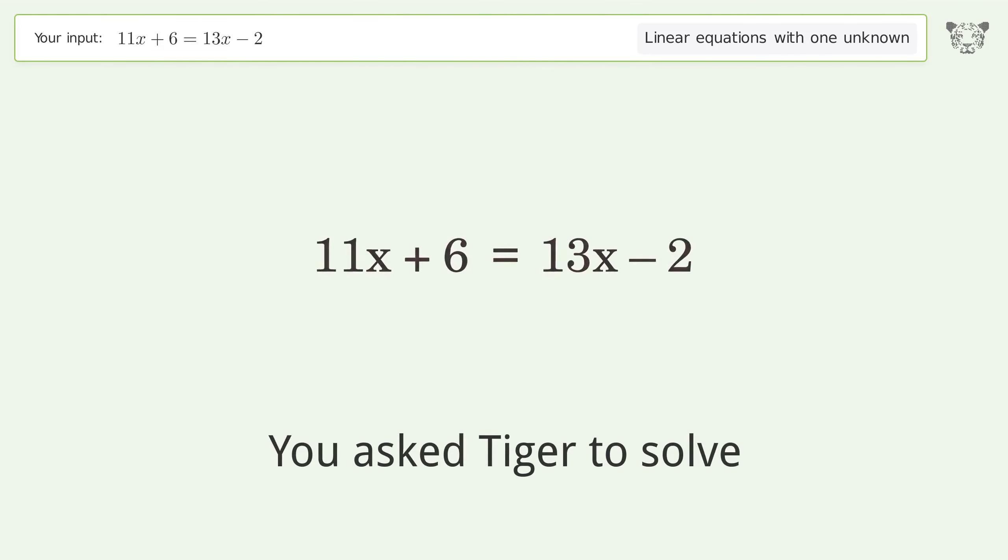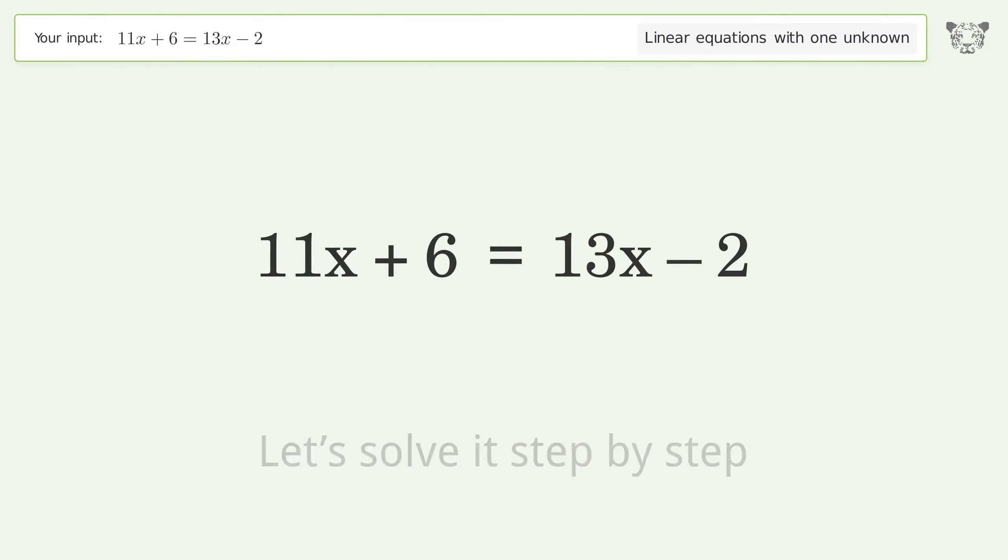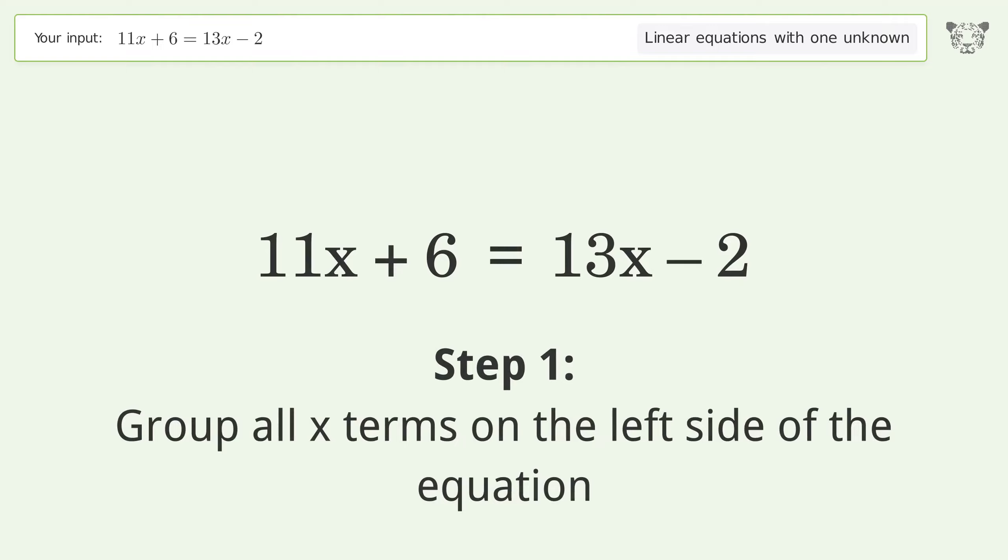You ask Tiger to solve this. This deals with linear equations with one unknown. The final result is x equals 4. Let's solve it step by step. Group all x terms on the left side of the equation.